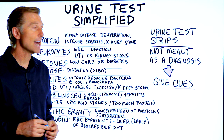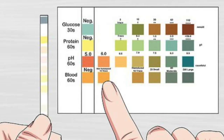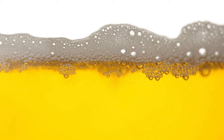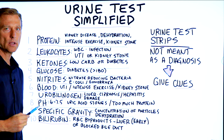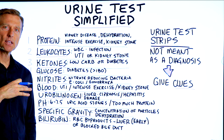I'm going to make this as simple as possible. Normally these strips have like 10 different things to look at, so let's just go down the list. The first one is protein. If there's excess protein in the urine, potentially there could be kidney disease, dehydration, or you just worked out intensely, because when you exercise that can break down certain proteins that can end up in the urine. It could also be a kidney stone.